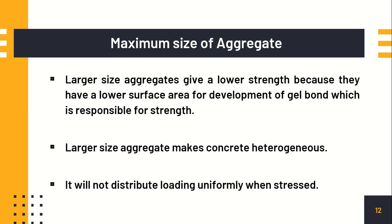The sixth factor is the maximum size of aggregate. For coarse aggregate, 20 mm is the generally used maximum size. The larger the aggregate size you use, the less strength you get, because larger aggregates have less surface area — meaning less area of contact with the cement paste — and hence less strength. Do not go for bigger size aggregates expecting more strength.